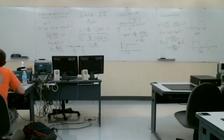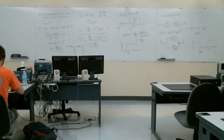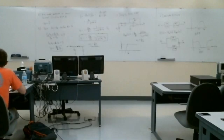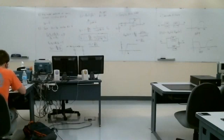Let's talk about perfect filters — ideal filters. An ideal low-pass filter has a perfect magnitude response: it passes all frequencies up to some cutoff frequency fc and completely eliminates any frequencies above that. We write this as: H(f) = 1 for |f| < fc, and 0 for all other frequencies.